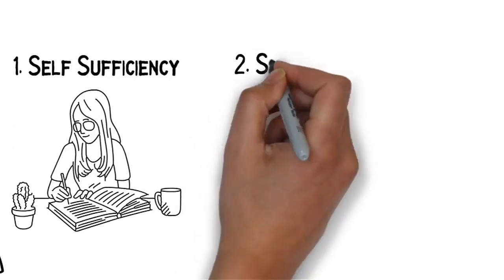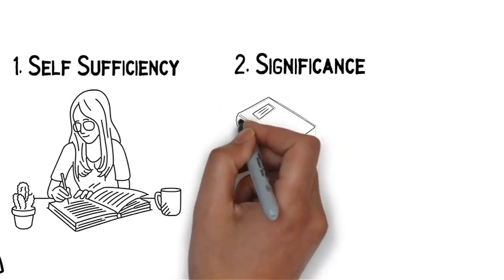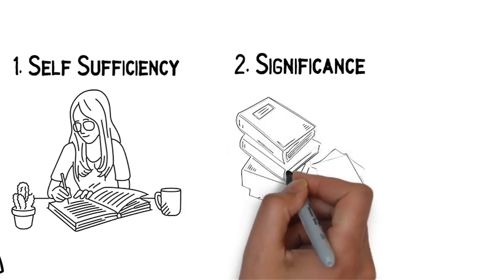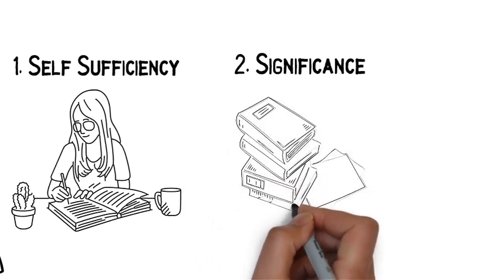Number two is significance. It will contribute to the development of the learning abilities, skills, processes, and attitude of the learner to attain holistic learning.